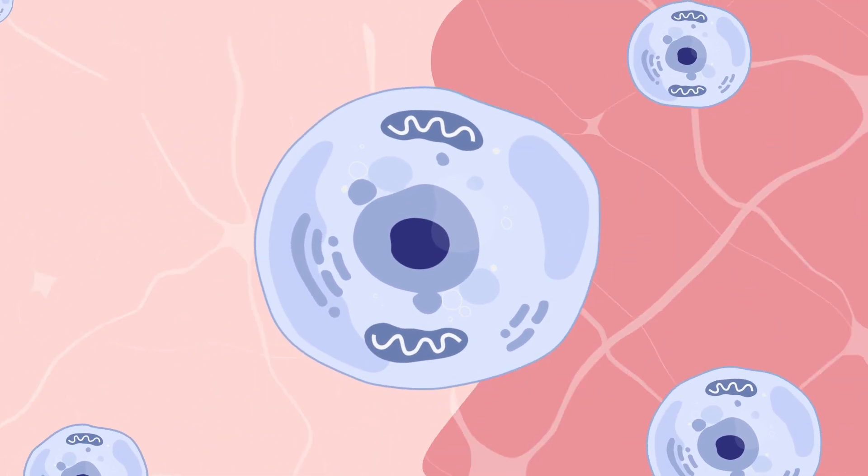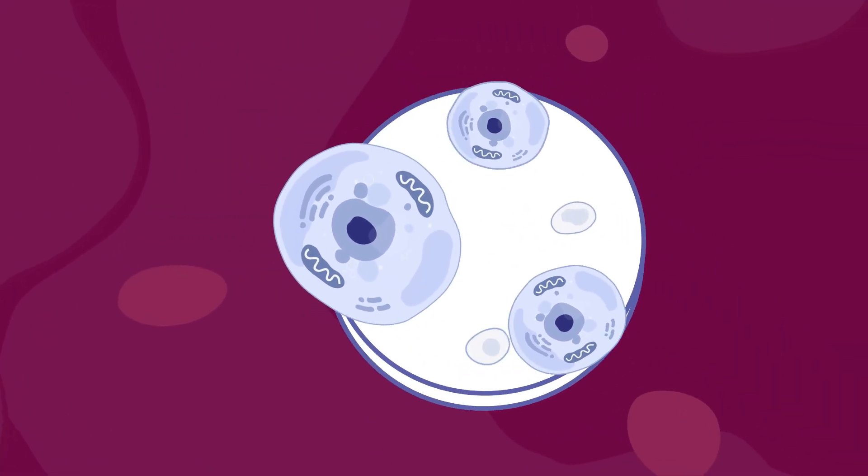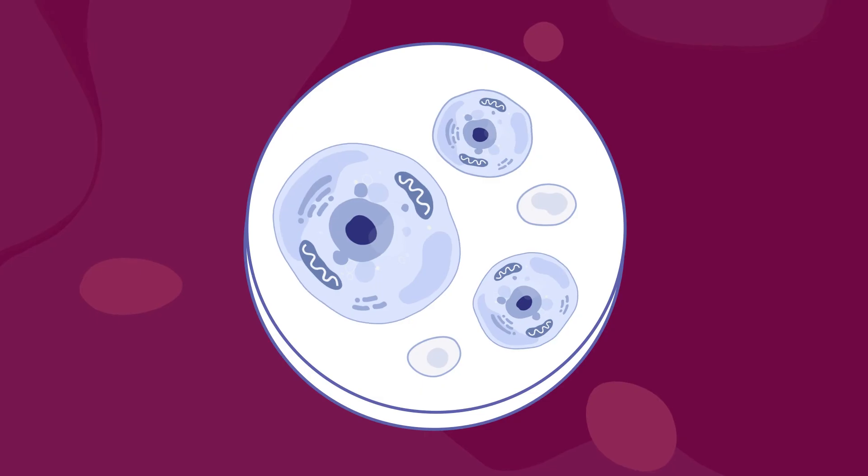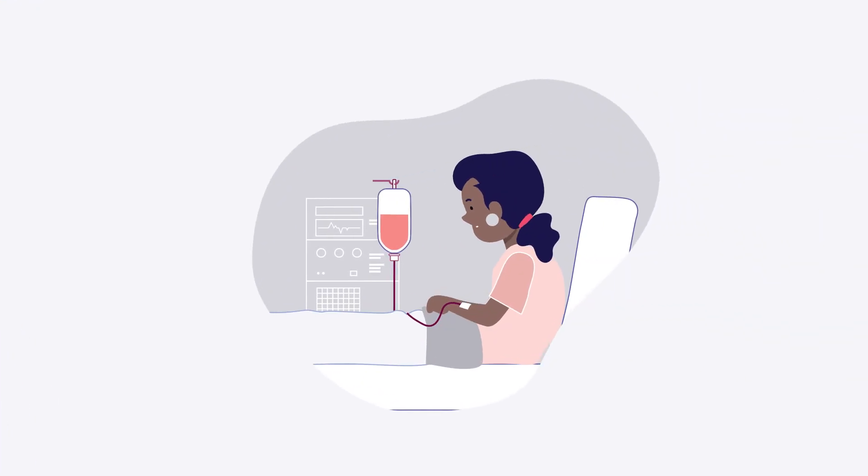Genetically modified cell therapy removes a person's own cells from the body. The removed cells are treated by adding the working gene or modifying the affected one. The treated cells are then returned to the body.